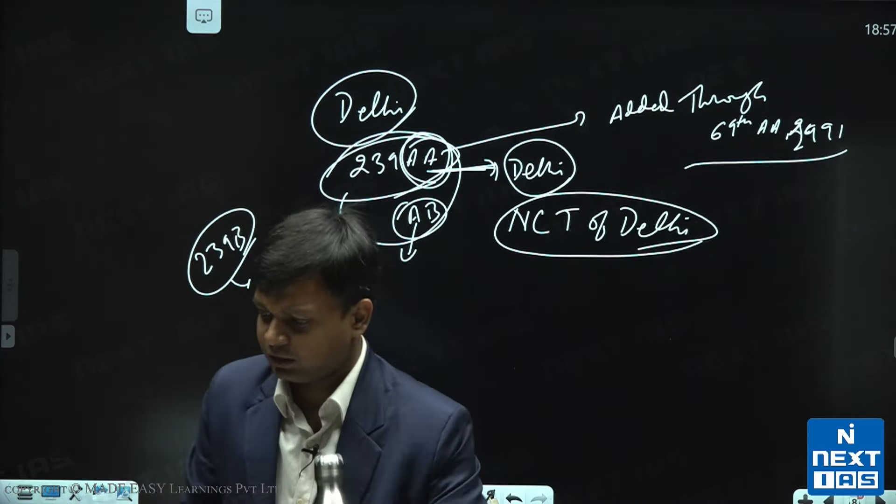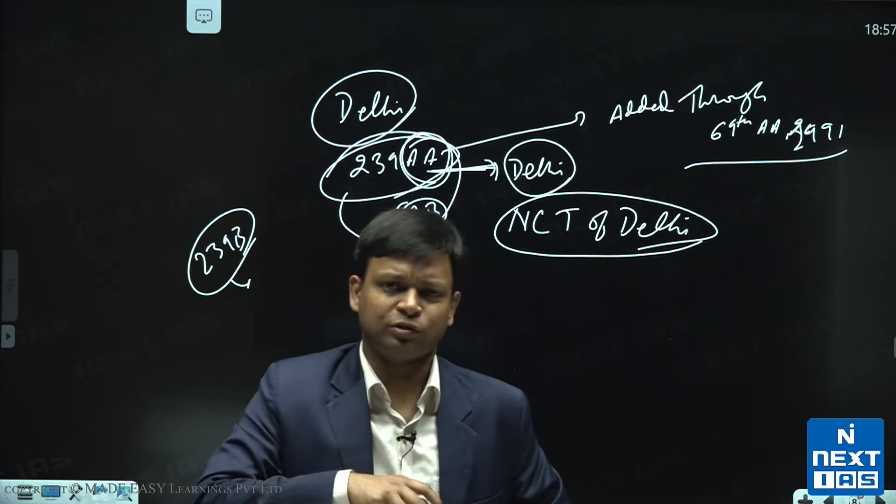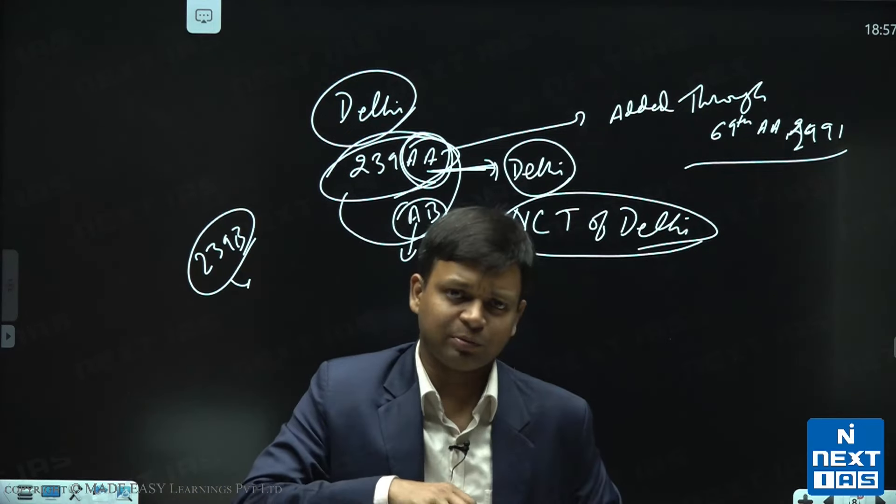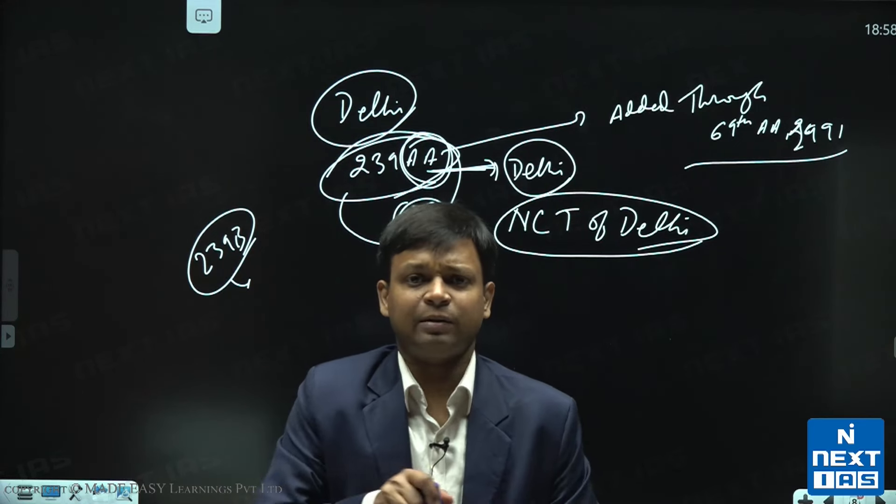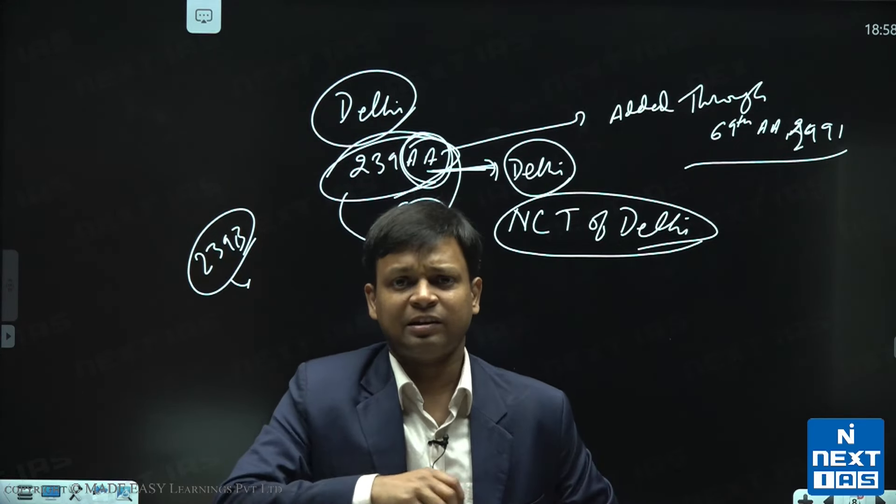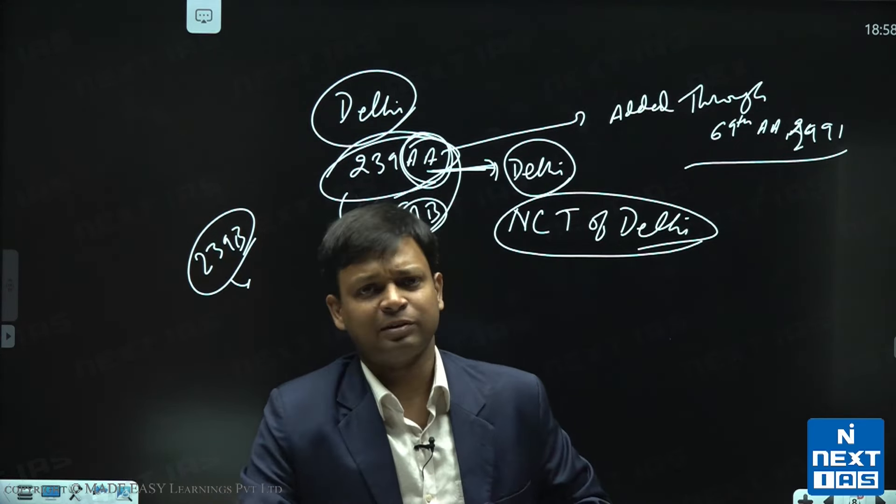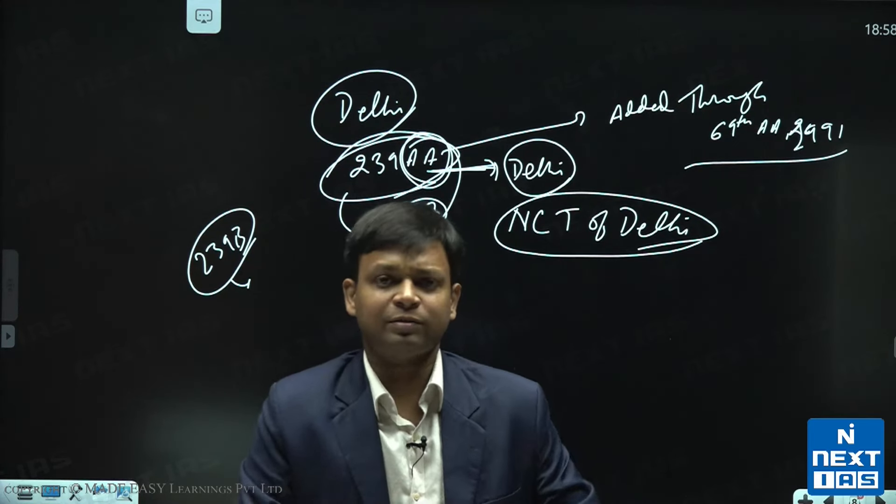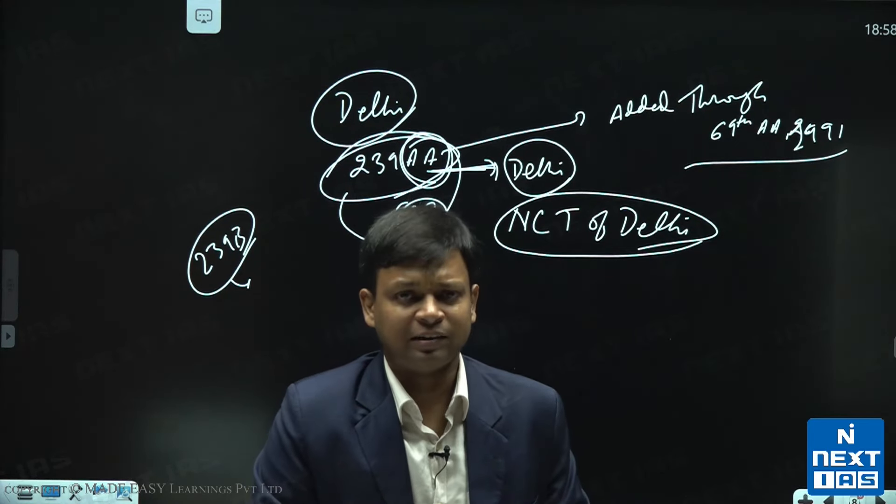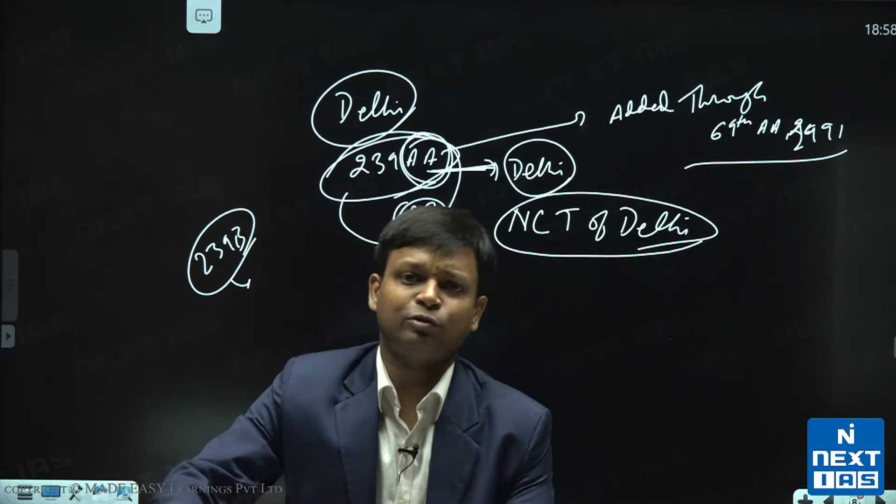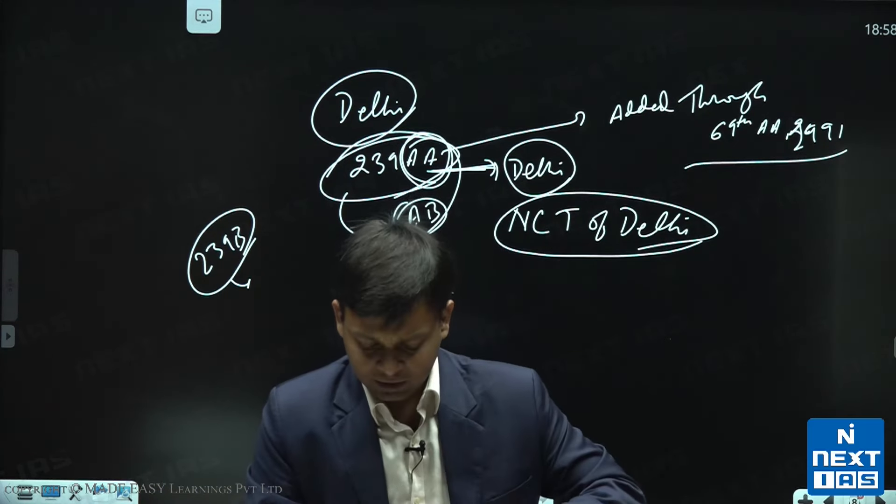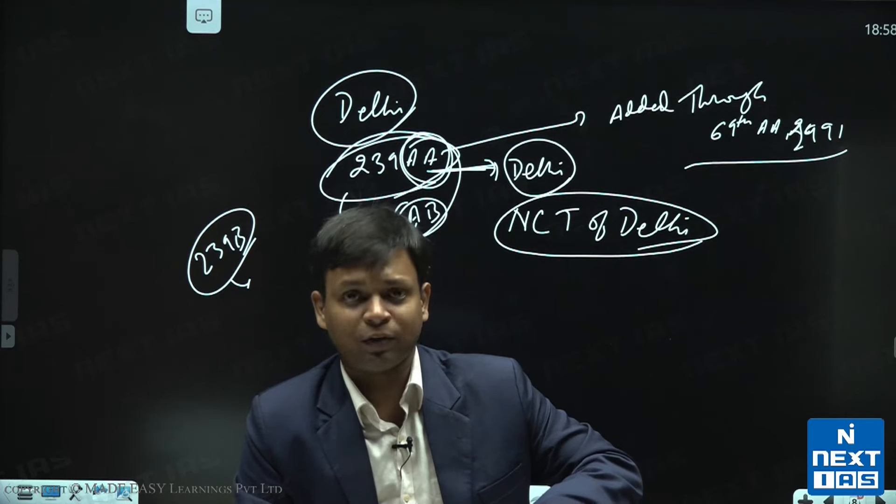Some of you are asking about concurrent list subject. Of course, concurrent list subject Jammu and Kashmir के लिए है. If a law is made by the state legislature and president has given assent to it, then it will prevail over parliament's law. But parliament can always make a law over every subject of UT. UT is under a lot of control over the parliament.